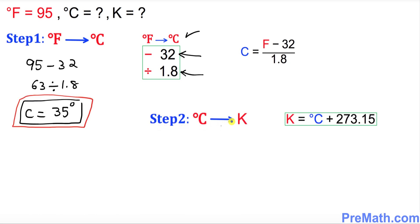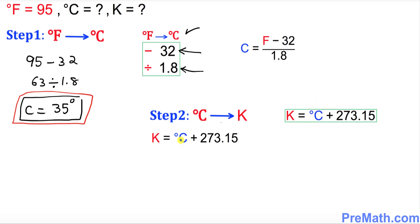In our second step, we will be going from degrees Celsius to K. We're going to convert from C to K, and this is the formula that we will be using. Let's go ahead and apply the value of C in this formula.